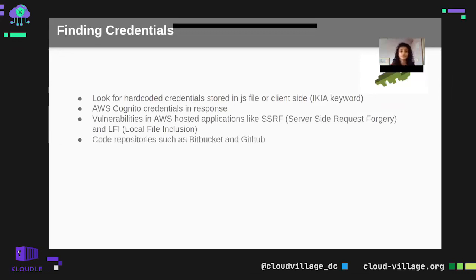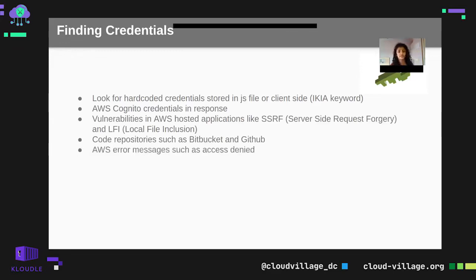Code repositories such as Bitbucket and GitHub — you can find credentials there in public. Many companies expose their code on GitHub, which is fine, but if you are storing credentials in the repository, it's an issue. Anyone can search and find credentials on GitHub. AWS error messages such as access denied — if not properly handled, they can disclose your credentials.